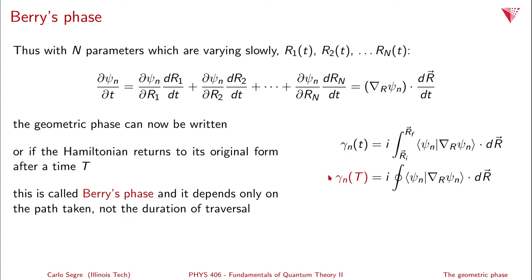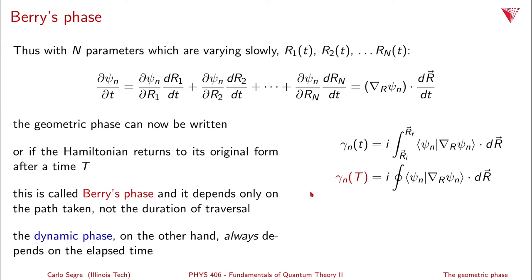This is called Berry's phase, and Berry's phase depends only on the path taken through the n-dimensional parameter space r. There is no time dependence — it doesn't depend on how long it takes to cover that path. The dynamic phase, by contrast, always depends on elapsed time: θₙ(T) = −(1/ħ) ∫₀ᵀ Eₙ(t') dt'. The geometric phase factor only depends on the path.